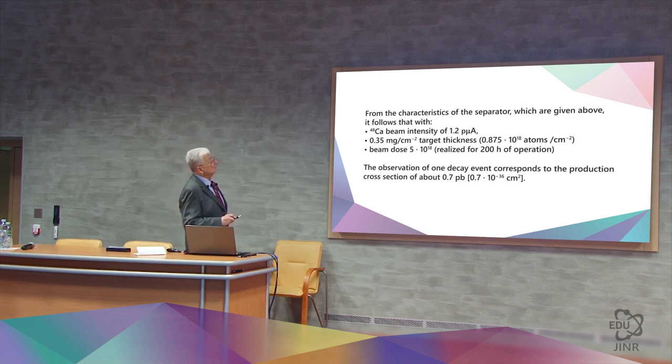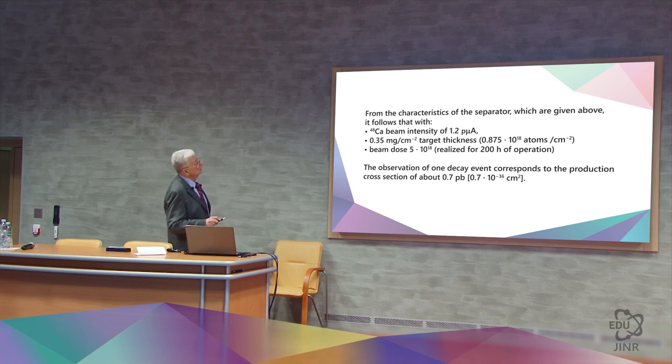From all of the above and from the characteristics of the separator, we can conclude that if we held a calcium 48 beam with an intensity of 1.2 microamps per particle, we use a target of 0.35 milligrams per centimeter squared, which is about 0.8 times 10 to the power of 18 atoms per centimeter squared.